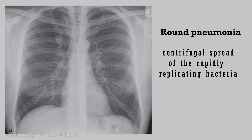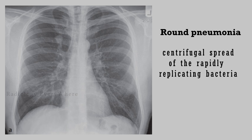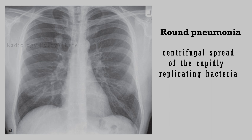Our fourth, additional differential diagnosis is round pneumonia. This is usually seen in pediatric patients younger than 8 years. It is due to centrifugal spread of rapidly replicating bacteria through the pores of Cohn and canals of Lambert from a single primary focus in the lung.